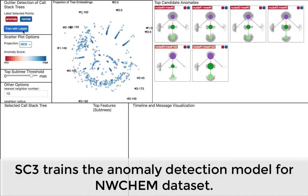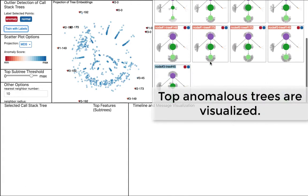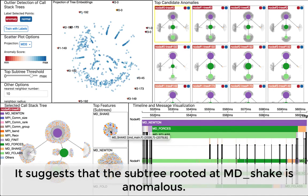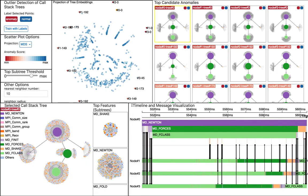In the third case, SC3 focuses on the NWChem application in the HPC cluster. He selects the top anomalous tree. The subtree visualization suggests that the substructure which roots at MDShake is anomalous.